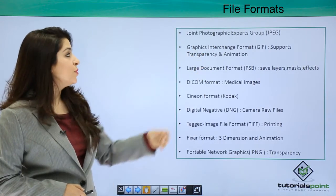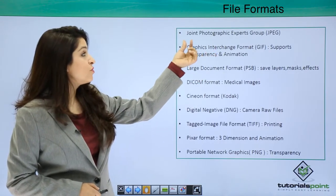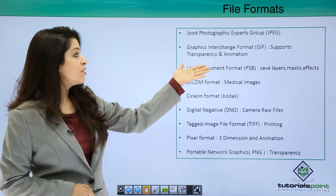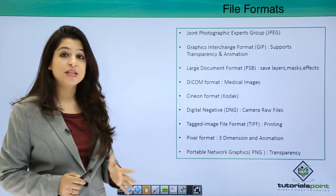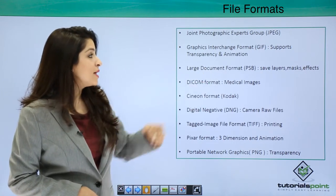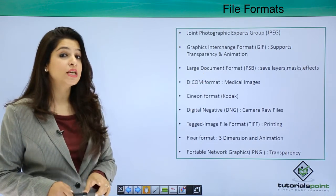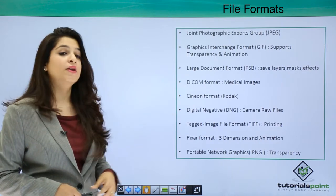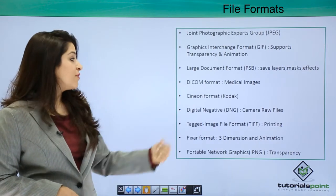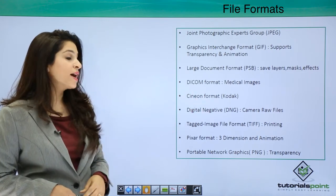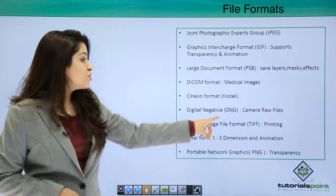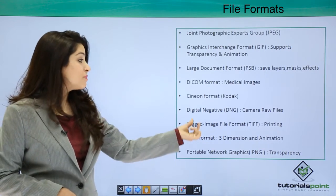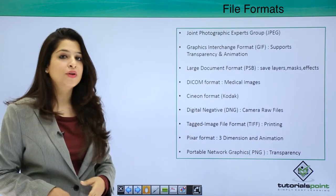Going ahead with the various file formats available: we have JPEG (Joint Photographic Experts Group); the GIF (Graphics Interchange Format) that supports transparency and animations; the large document format PSB, which also saves your effects, masks, and layers; the DICOM format for medical images; the Cineon format for Kodak; the digital negative DNG format for camera raw files.